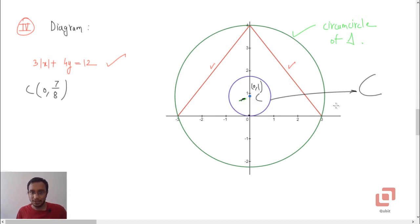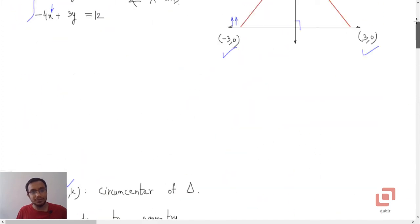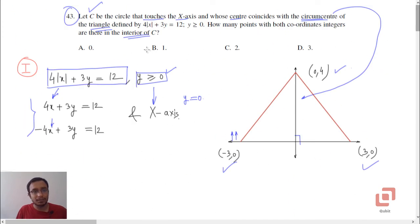So the answer is 1. Let us go back to the options now. Interior of C, so only one point and that is B. See, had the question been on C and interior of C, then the answer could have been different. In that case, the answer would have been option C. So now we have completed question 43. I thank you all for watching and in the next video, we will solve question number 44.